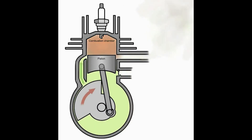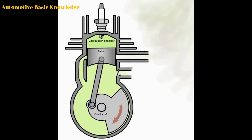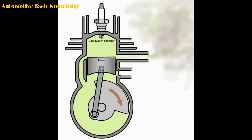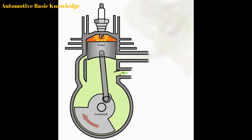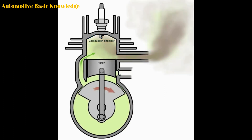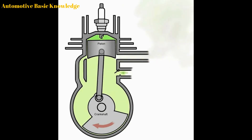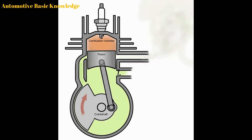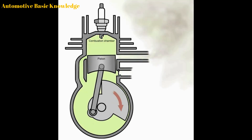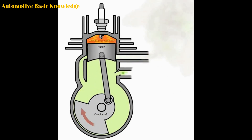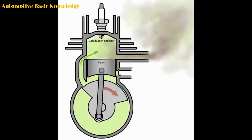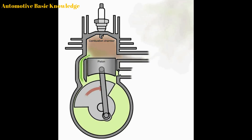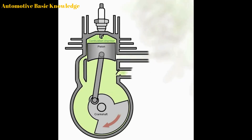The two-stroke engine performs all the same steps which are performed by a four-stroke engine: intake, compression, power and exhaust. But the two-stroke engine performs all these steps in only two strokes, unlike the four-stroke engine which completes one power cycle in four strokes.